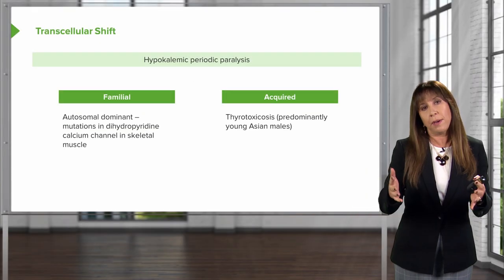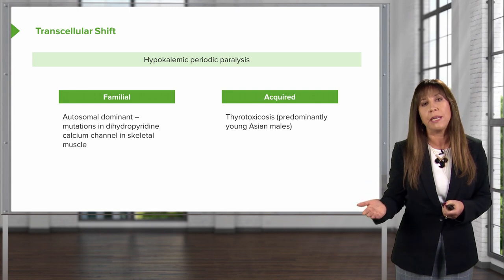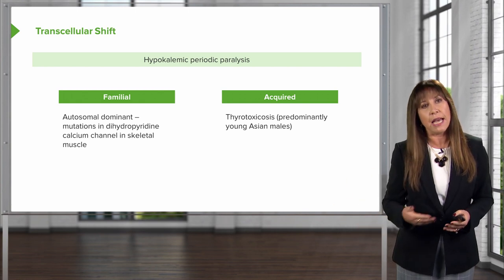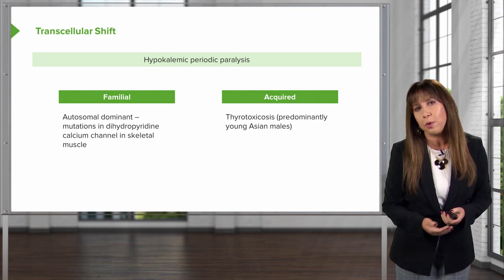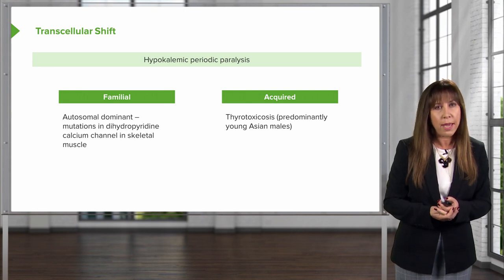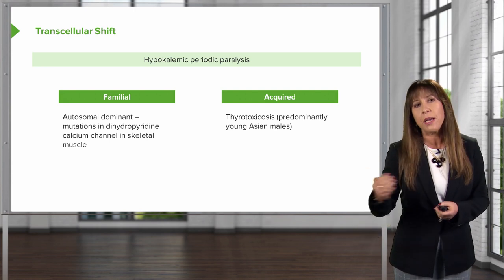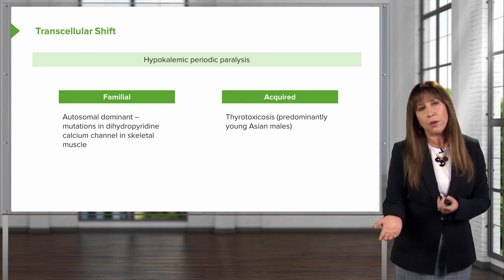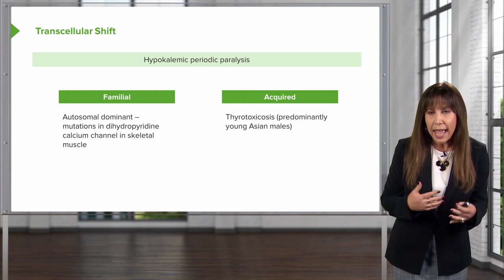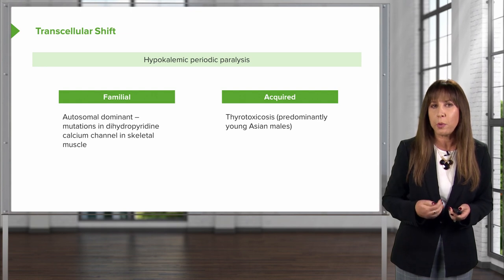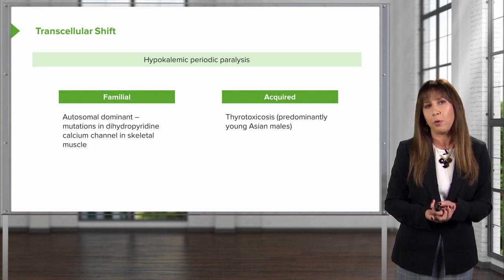Board exams will typically tell you these are predominantly young Asian males, but be on the lookout because this can happen to anybody. My last patient with hypokalemic periodic paralysis was a 22-year-old Caucasian college student celebrating the end of midterms. He went out, had beer and pretzels, and woke up at 3 a.m. paralyzed from the waist down. His potassium was 1.9, and a very astute provider checked thyroid function tests — sure enough, he had Graves' disease and was thyrotoxic. By treating his Graves' disease, we were able to ameliorate his hypokalemic periodic paralysis.